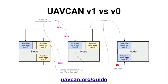As a result, we anticipate much more universal adoption of V1, and we already see it displacing general-purpose frameworks such as DDS or message queues from the real-time niche. To help with the transition, we have published a comprehensive usage guide at uavcan.org.